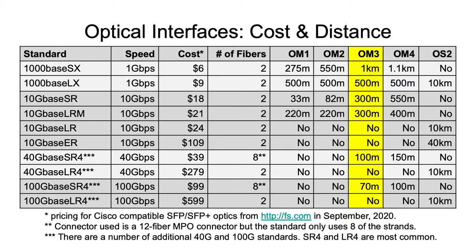With OM3 fiber, it will support one kilometer using 1000BASE-SX optics, and 500 meters using 1000BASE-LX optics. Notice that most of these optics are either multimode or single mode — 1000BASE-LX is one of the exceptions. If you do single mode, it will support 10 kilometers using 1000BASE-LX.